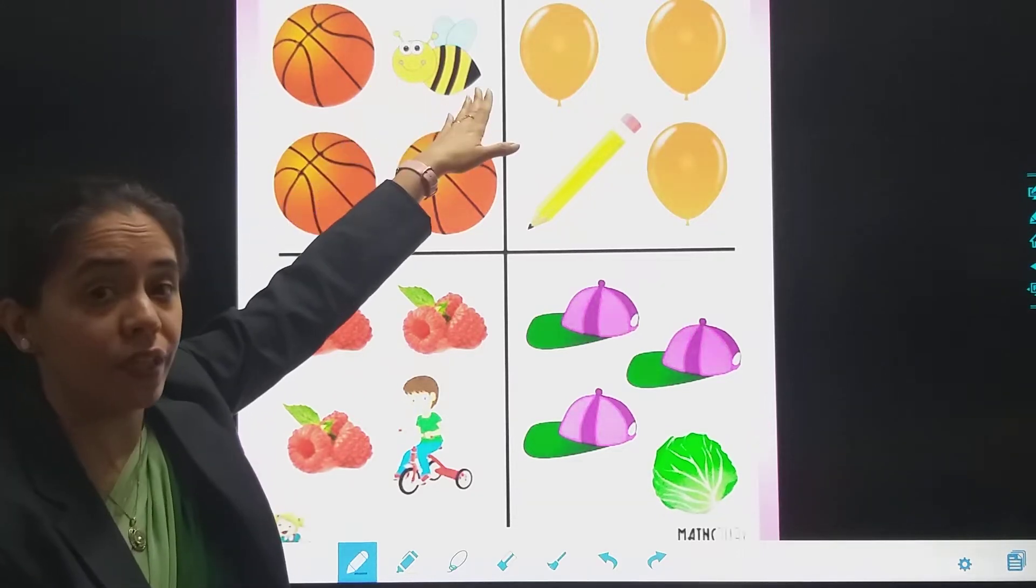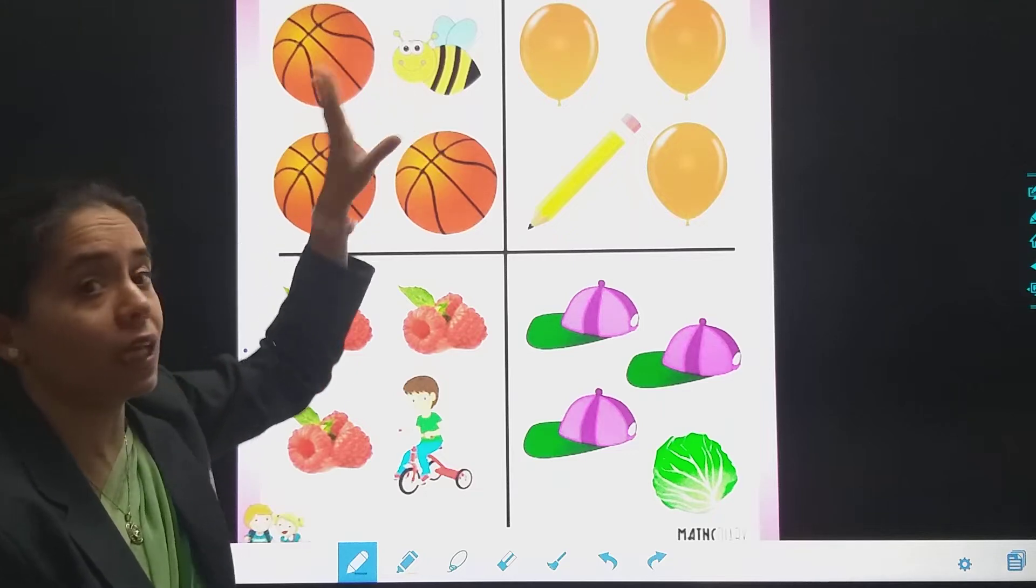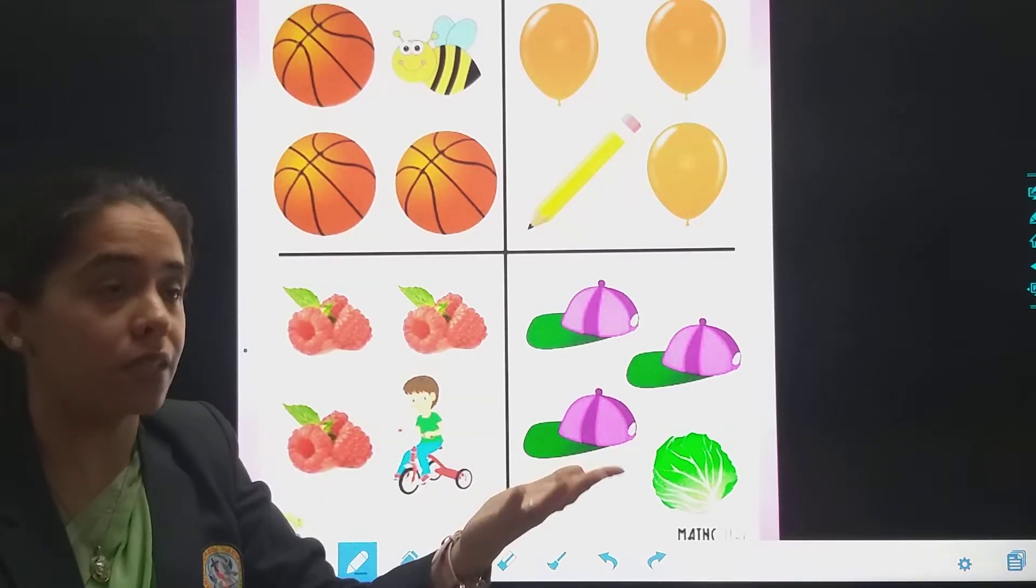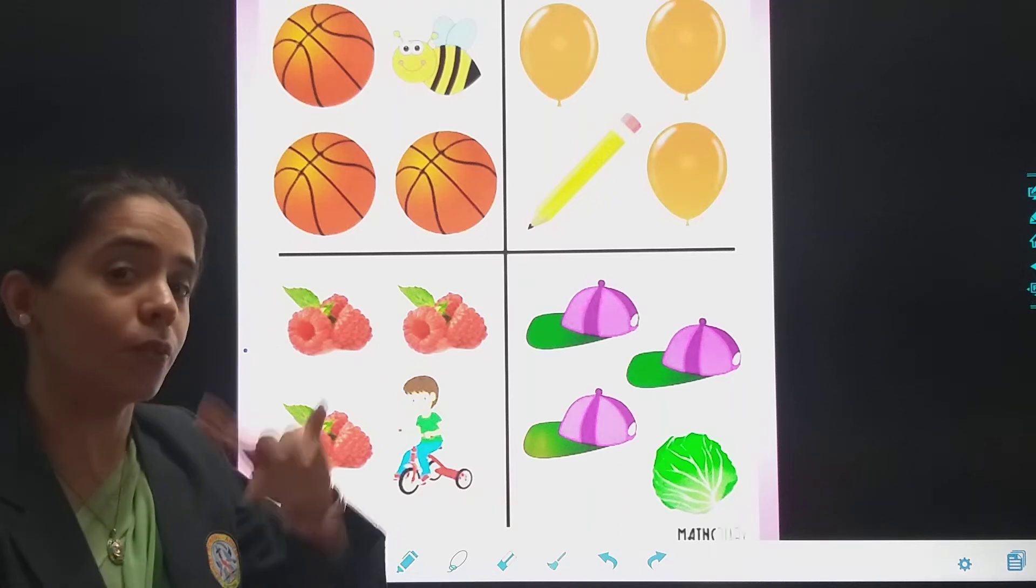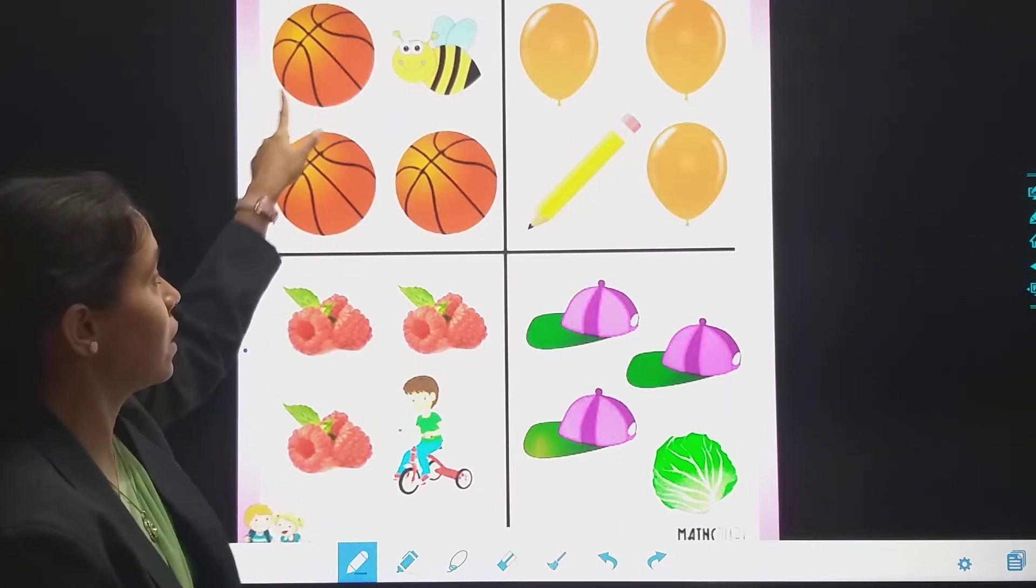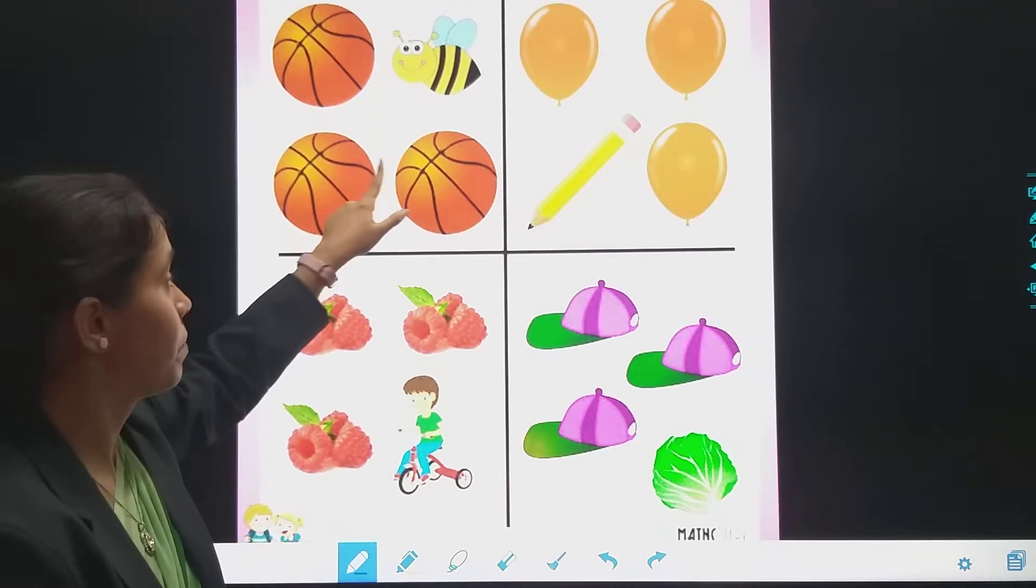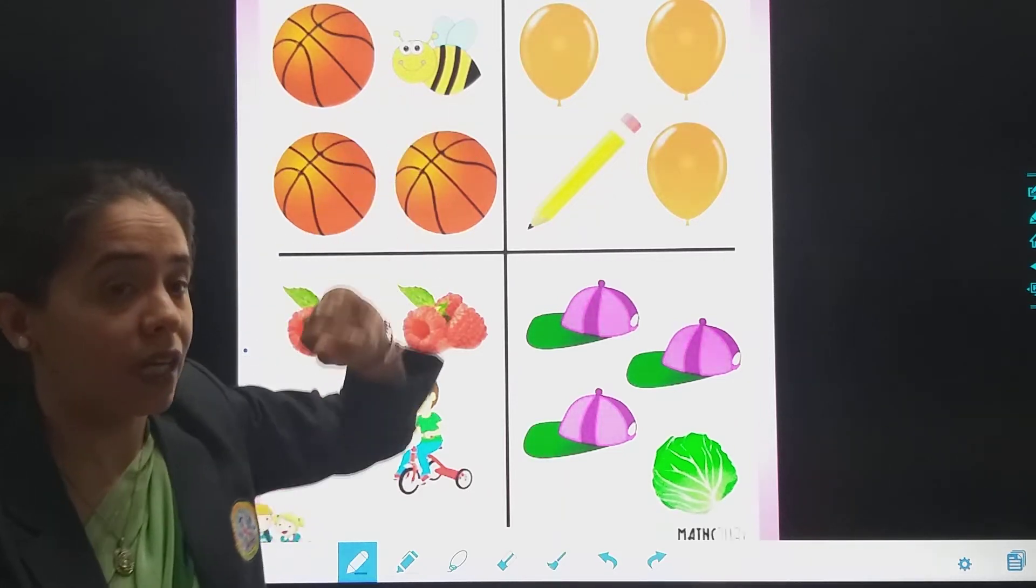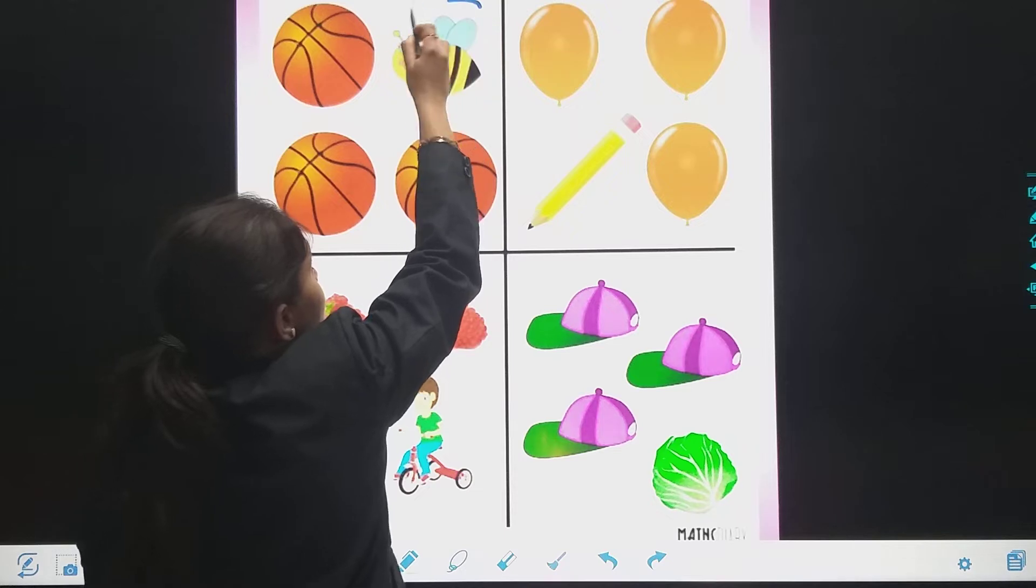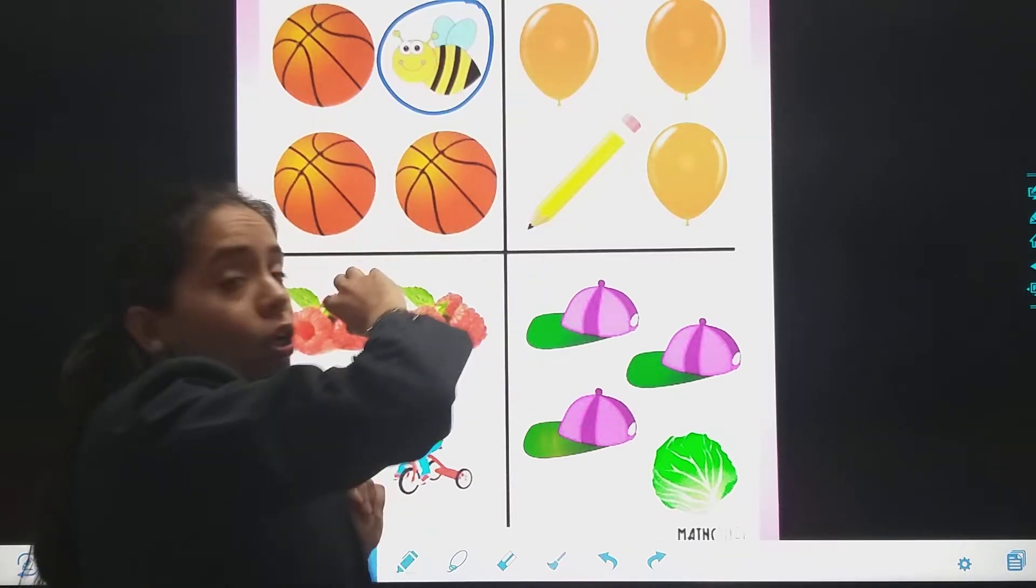So this is different. Basketball ke beech pe ek honeybee hai. Toh wo ek odd cheez hai. That is something different. Toh usko hum kya karenge? We will circle. This is basketball. This is also basketball. Yeh bhi basketball hai. But yeh toh basketball nahi hai na. This is honeybee. So we will circle the odd one because that is different.